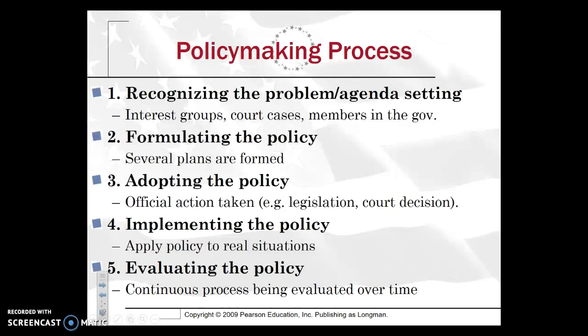The fourth part is the implementation of the policy. The government must see that policy is applied to a real situation. For example, if there's new gun control laws, then the public needs to know about them. There must also be enforcement. That's also where you're going to see the bureaucratic agencies, as discussed in the subunit of Unit 4.